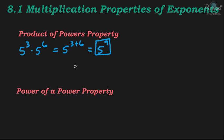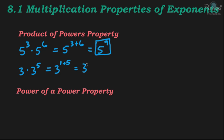Another example: 3 times 3 to the 5th power. This one might throw you for a loop, but remember any number has an invisible 1 as the exponent. So we have 3 to the 1st power times 3 to the 5th power. Adding the exponents gives us 3 to the 1st plus 5, which equals 3 to the 6th power.